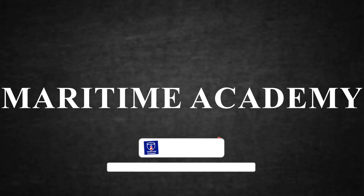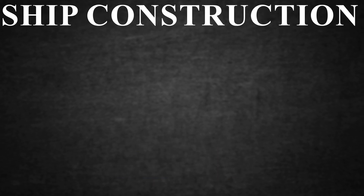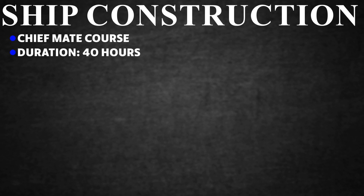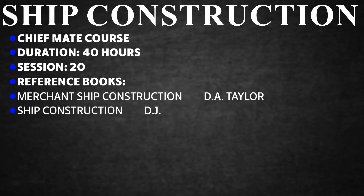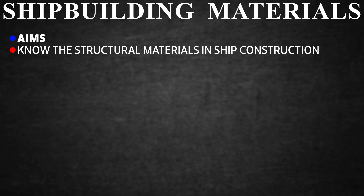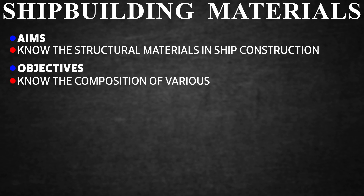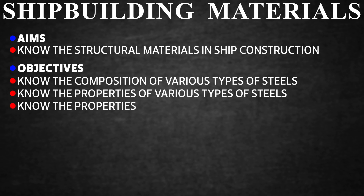Maritime Academy — Ship Construction, Chief Mate Course. Duration: 40 hours, Session 20. Reference books: Merchant Ship Construction by D.A. Taylor; Ship Construction by D.J. Ayers; Merchant Ship Construction by H.J. Percy; Shipboard Operations by H.I. Lavery. Objectives: Know the structural materials in ship construction, know the composition and properties of various types of steels, and know the properties of aluminium.